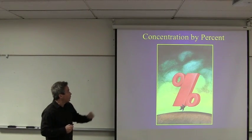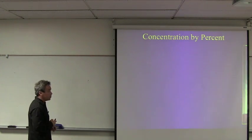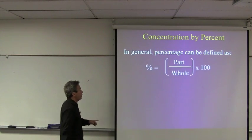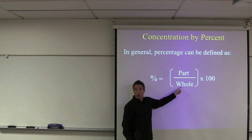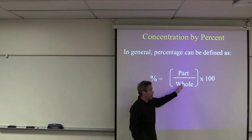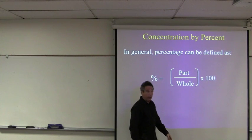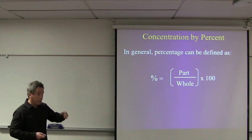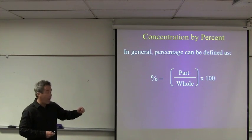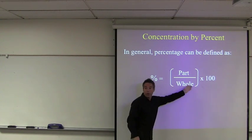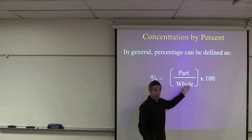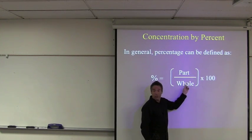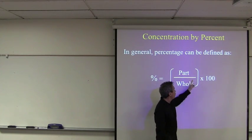The first concentration unit that we're going to learn about is concentration by percent. What does percent mean? In general, not only in science, anywhere. In general, percent can be defined as the ratio of the part over the whole. That's just the ratio or the fraction. And when you multiply it by 100, that gives you the percent. For instance, we could calculate the percent gentleman in the room. So what we'll do is we'll count the number of guys in here, that's the part, divide that by the total number of students.